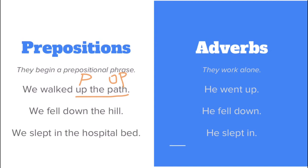The adverb sentence is: he went up. Adverbs work on their own. So 'up', in this case, even though it's the exact same word, is an adverb. It's answering the question 'where' and it's modifying the verb 'went'.